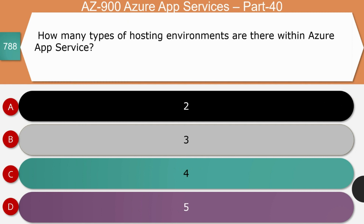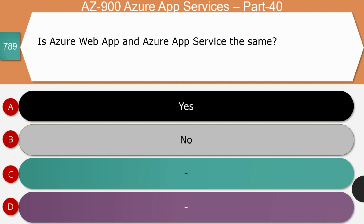Next question — how many types of hosting environments are there within Azure App Service: two, three, four, or five? The right answer is option A — two. There are two types of hosting environments in Azure App Service: using the Azure App Service Plan or the Azure App Service Environment.